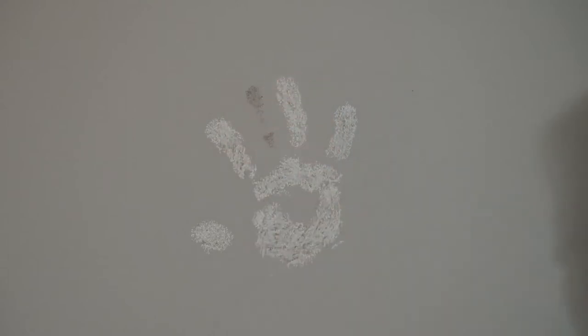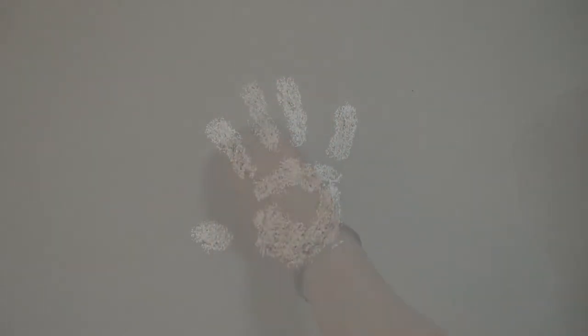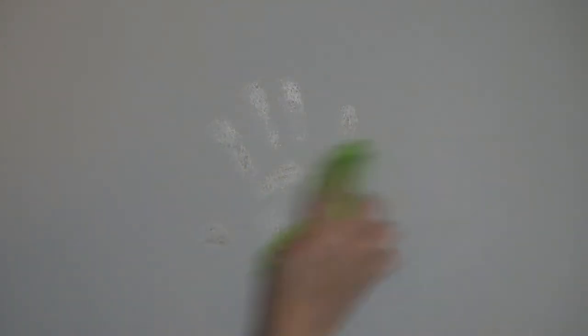After you've covered all the areas with chalk, let it sit for 10 minutes. Then just wipe it away with a dry microfiber cloth and a lot of it will come right off.